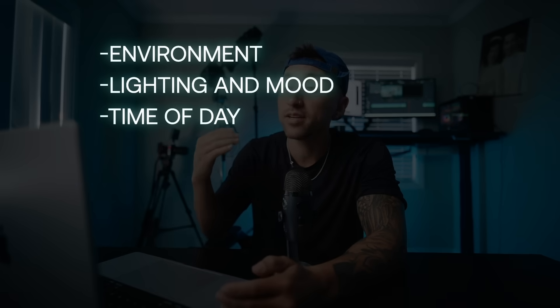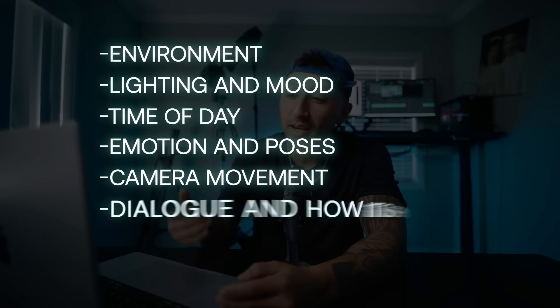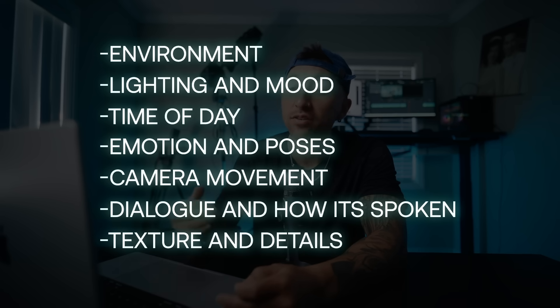For the other two videos, it's the exact same workflow, but we didn't have reference images. So you want to be much more detailed — include details like environment, lighting and mood, time of day, emotions and poses, camera movement, dialogue and how it's spoken, and texture and details. So even though ChatGPT will do a lot of the work, you still want to include as many details as you can to get close to the vision that you want. Also keep in mind when it comes to dialogue, you just want to specify who's speaking. And if you don't have reference images, you can reference a style that you like — something like 'in the style of a Nike ad,' or more vague like 'a luxury sports brand.'